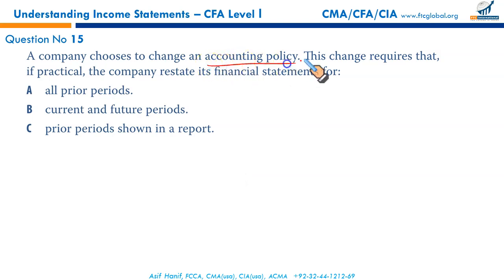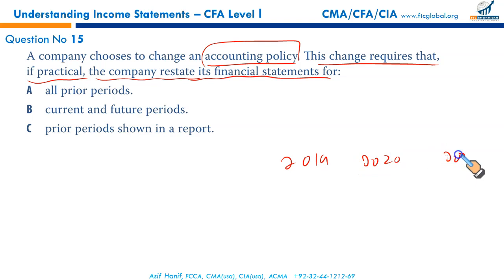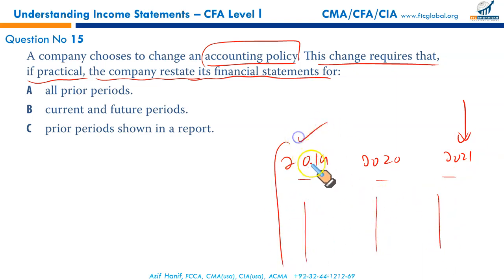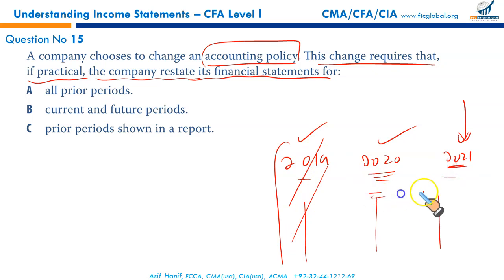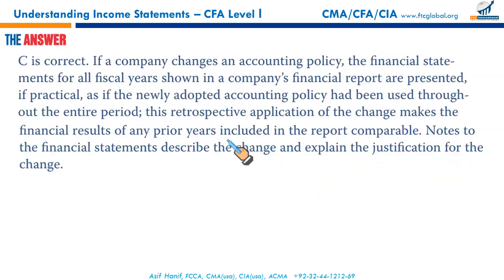A company choosing to change an accounting policy must restate its financial statements retrospectively from the earliest reported period. If the change occurred in 2020 and three years of results are presented, prior year financial statements from the earliest reported period — say 2019 — must all be restated. So the change is applied retrospectively to prior periods shown in the report. That makes C the correct option.